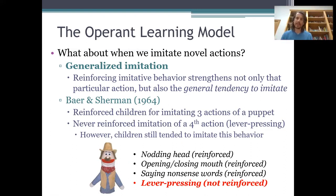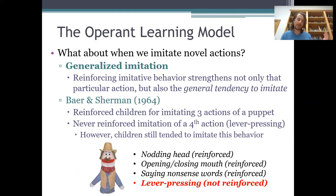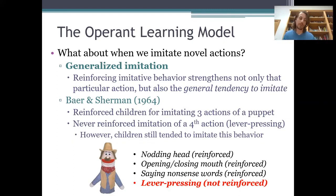For example, with preschool-age kids, Baer and Sherman found that if they reinforced kids for imitating three of a puppet's actions, then the kids would also imitate a fourth action even though they never got reinforced for it. What the kids seemed to acquire from the reinforcement of those first three actions was a general tendency to imitate the puppet — generalized imitation. The concept of generalized imitation is very important in the operant learning model because we'll obviously imitate new behaviors and novel actions we've never been reinforced for imitating before, and according to this model, generalized imitation explains why we do that.